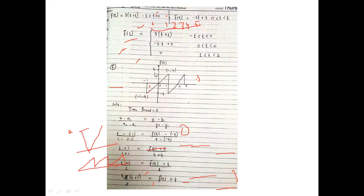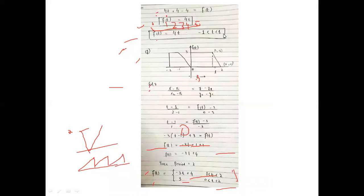For the next function, the slope is constant throughout from minus one to one, so there is no need to apply the slope formula separately for each half. Apply the two-point formula directly from minus one to plus one. With x1 = −1, y1 = −4, x2 = 1, y2 = 4, we get f(t) = 4t from minus one to one. The time period is two.